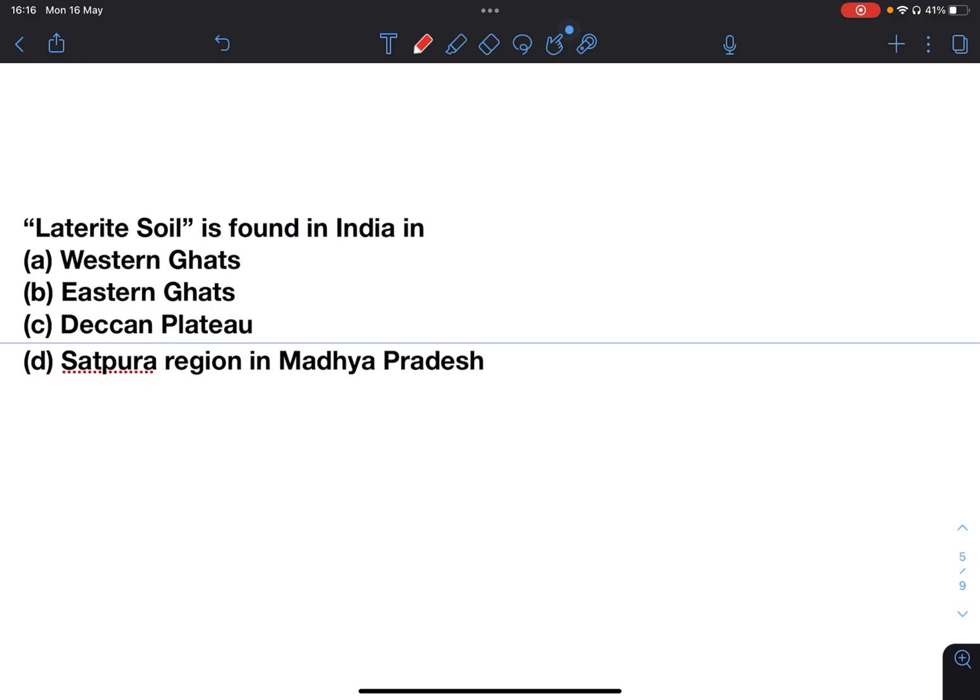Next: Laterite soil is found in India in western ghats, eastern ghats, Deccan plateau, or Satpura region in Madhya Pradesh. Laterite soil is rich in iron and aluminium and is considered to have formed in hot and wet tropical areas. Answer will be A, western ghats.